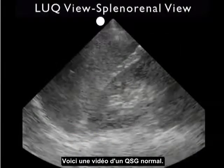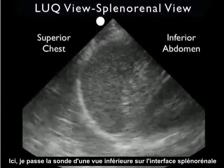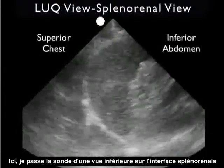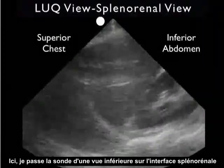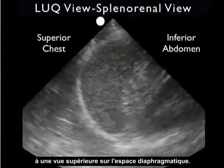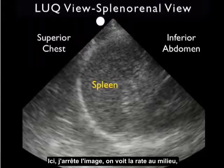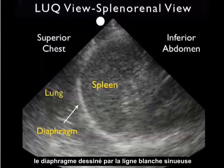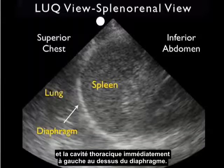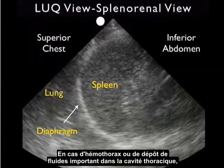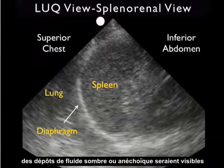Here's another normal video clip taken from the left upper quadrant. I'm swinging the probe from inferior — looking at the splenorenal interface — to superior, looking at the infradiaphragmatic space. We see the spleen in the middle, the curving white diaphragm, and the thoracic cavity just left or superior to it. If the patient had a significant hemothorax, that would be represented by a dark or anechoic fluid collection just above the diaphragm in the thoracic cavity.